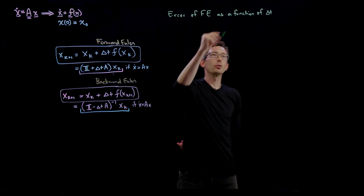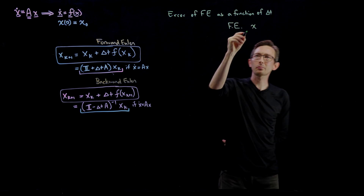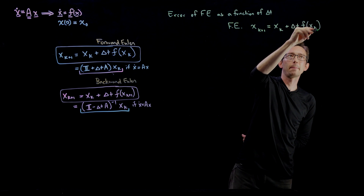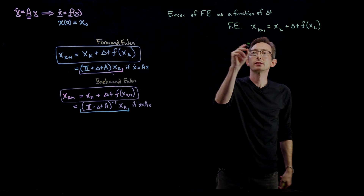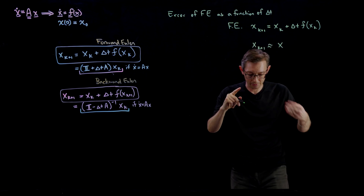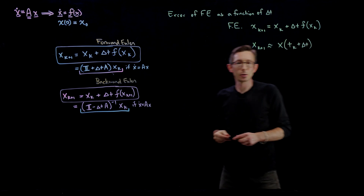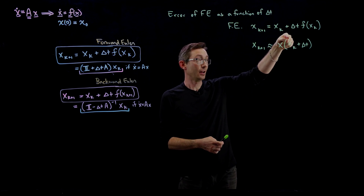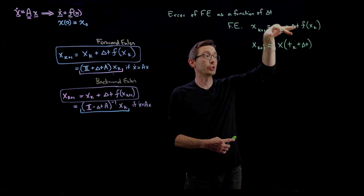Forward Euler says x at time k+1 equals x at time k plus delta t times f of x_k. This x_{k+1} is approximating x at my next time step — that is, x at time t_k plus delta t. This is the exact trajectory value if I had a perfect integrator, and the forward Euler scheme is just an approximation of this true value.